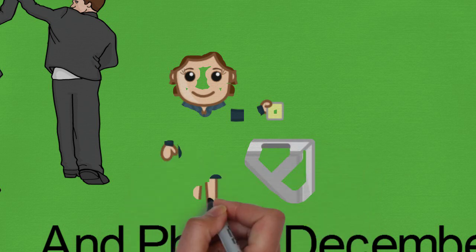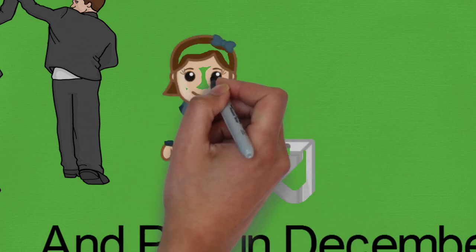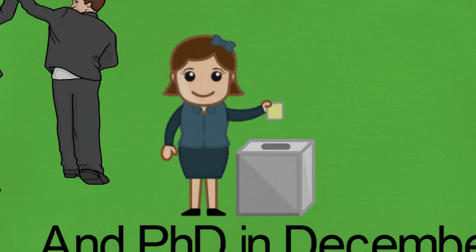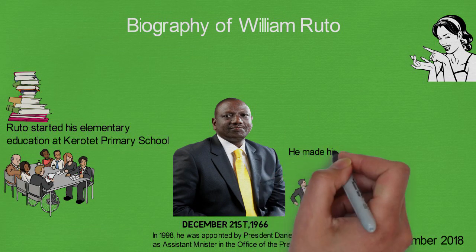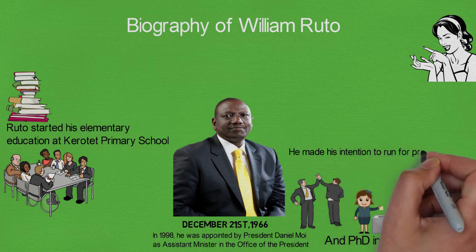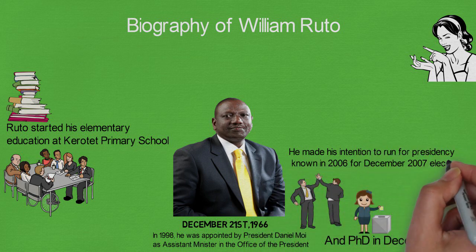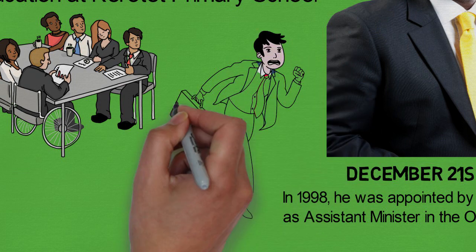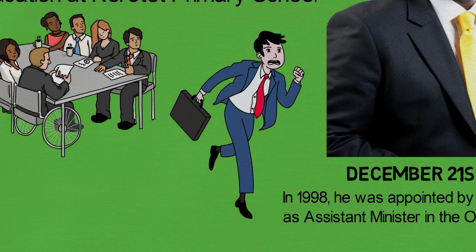Ruto has been active in politics as far back as 1992, and was the Organizing Secretary of Youth for Kenyan African Union 92, YK92, a group that was put together to support the election bid of President Daniel Arap Moi in 1992. He made his intention to run for the presidency known in 2006 for December 2007 election. He was condemned by some of his colleagues in the Kanu party. That led him to leaving the party.